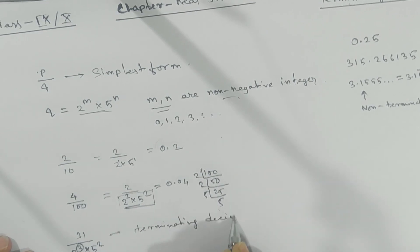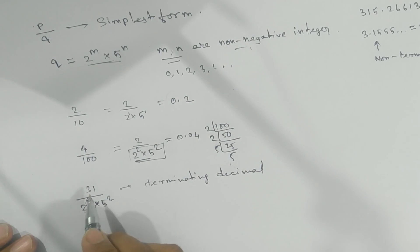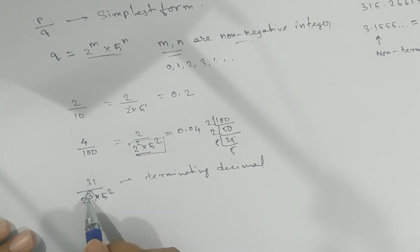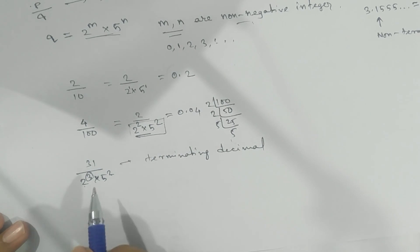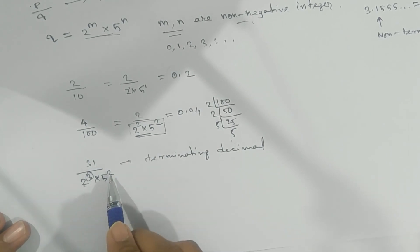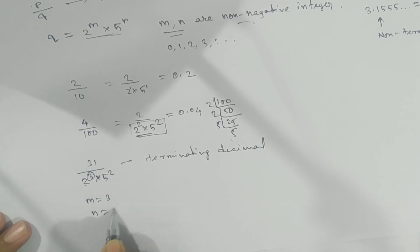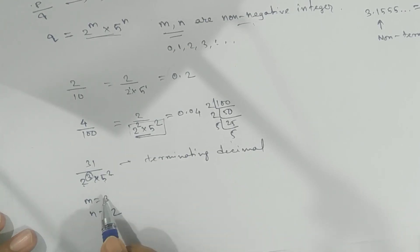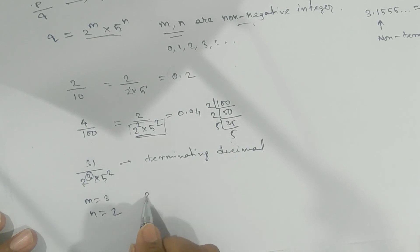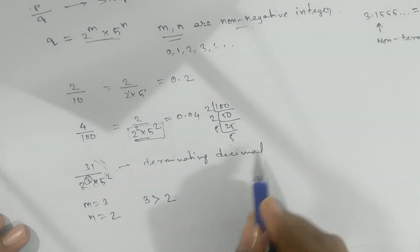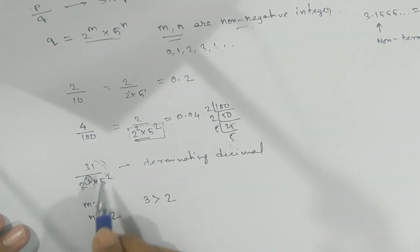If they ask after how many decimal places it will terminate, you can tell by looking at the powers. Here we have 2 to the power 3 and 5 to the power 2, so M is 3 and N is 2. Whichever is bigger — here 3 is the bigger one — so this number will terminate after 3 decimal places.